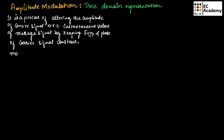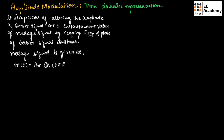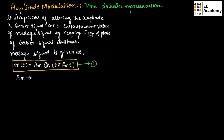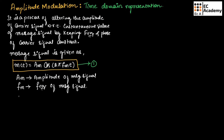Mathematically, the message signal is given as m(t) = am·cos(2π·fm·t). Let us call this equation number 1. Here, am is the amplitude of the message signal and fm is the frequency of the message signal.